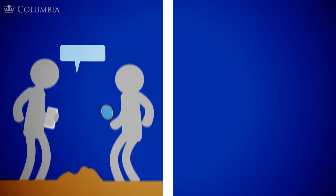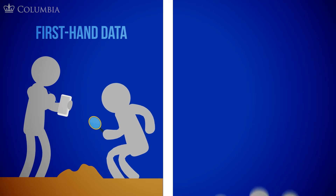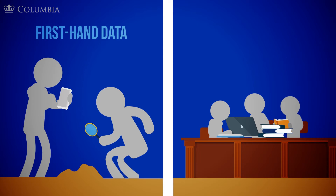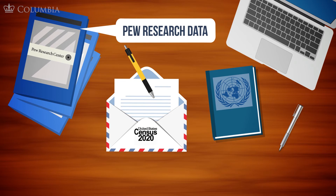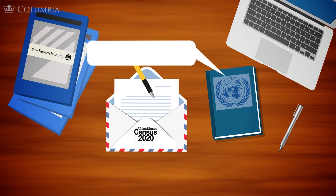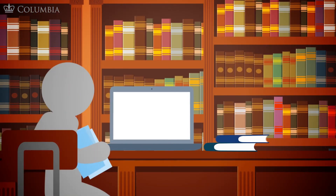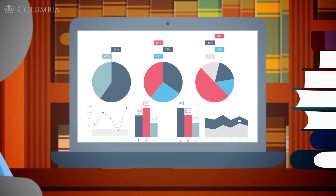If researchers are gathering the data themselves, then they are working with first-hand data. However, it is often the case that a researcher would use data that has already been collected and structured — in this case, the researcher would be encountering second-hand data. Some examples include census data, Pew Research data and other datasets provided by think tanks, United Nations data, and Google Maps data. Scholars and researchers analyze research data to reveal trends or patterns that are not always apparent from an investigation of other types of primary sources.